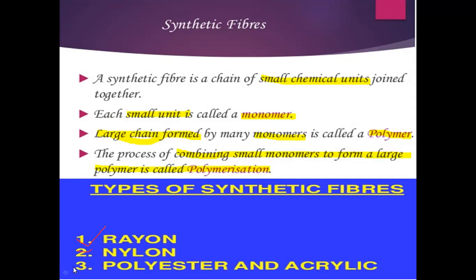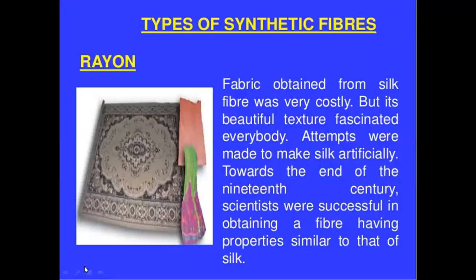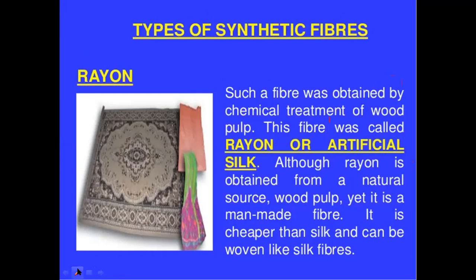Let's discuss rayon. Fabric obtained from silk fibers is very costly, but its beautiful texture fascinates everybody. Many attempts were made to artificially obtain silk-like fiber, and at the end of the 19th century, scientists were successful in obtaining a fiber with properties similar to silk. Such a fiber was obtained by chemical treatment of wood pulp.